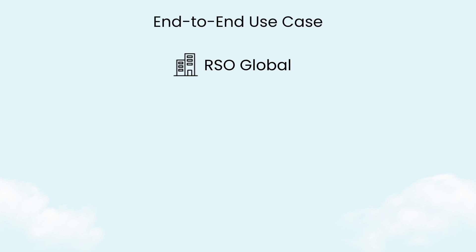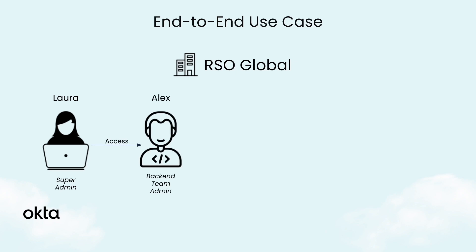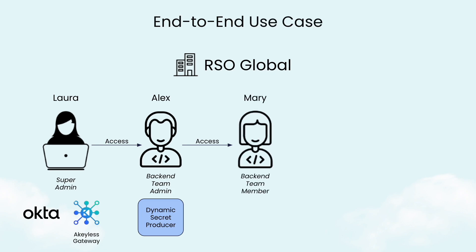In order to request a dynamic secret from MySQL or any other relevant application, a dynamic secret producer is created in Akeyless to generate temporary credentials just in time, which Mary receives and uses to log in with. So now we can put this all together: Laura integrates Okta with Akeyless for the organization's human users and creates the relevant access role for Alex with admin permissions within his path. Laura also configures the Akeyless Gateway within the company's environment. Alex then creates an access role for his team and also creates and configures the MySQL dynamic secret producer. Finally, we have Mary who requests a dynamic secret from Akeyless, which she was given access to, and now uses those temporary credentials to log in to the MySQL database — and her temporary user credentials will expire and be automatically revoked.